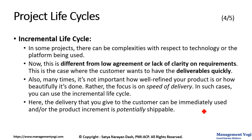Our next life cycle is the Incremental Life Cycle. In some projects, there can be complexities with respect to technology or the platform being used. Here the case is different from low agreement or lack of clarity on requirements. In Iterative Life Cycle, we went with iterations because we don't have clarity in requirements. In Incremental Life Cycle, it is not about lack of clarity or low agreement on requirements. This is the case where the customer wants to have the deliverables quickly, and the focus is on speed of delivery. In such cases, you can use Incremental Life Cycle.